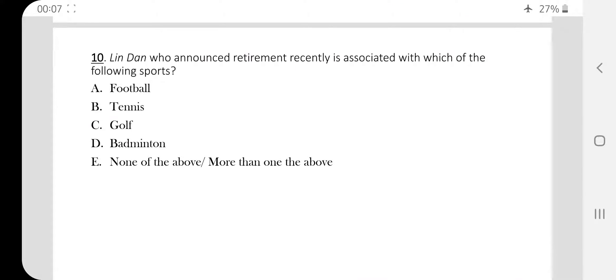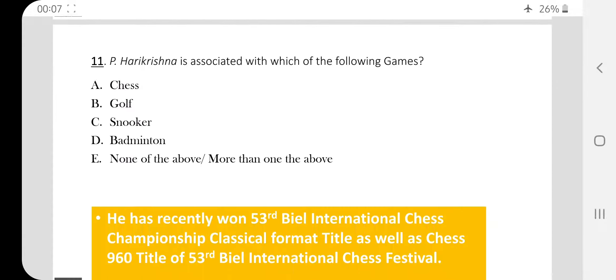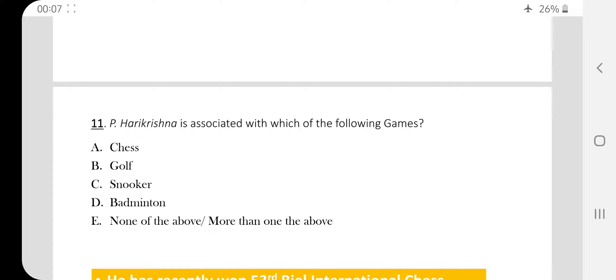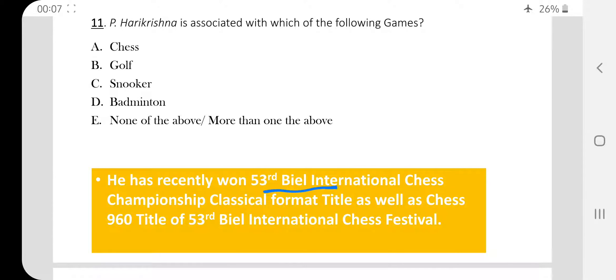Question number ten. Lynn Dan who announced retirement recently is associated with which of the following sports? Lynn Dan is related to badminton. He is Chinese and has won two gold medals in the Olympics.